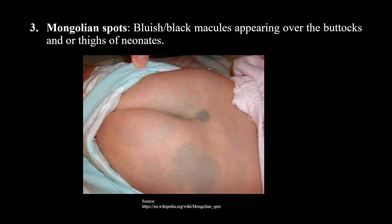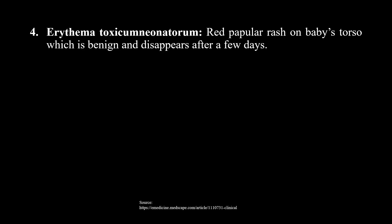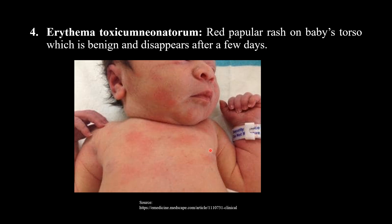Now, erythema toxicum neonatorum. This is a red papular rash on baby's torso - the trunk which is the chest area. It is benign and disappears after a few days. So erythema toxicum neonatorum is a normal finding that resolves on its own.